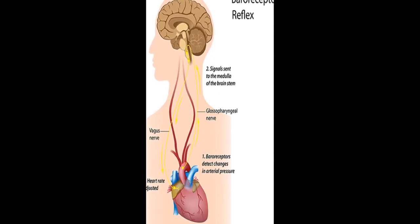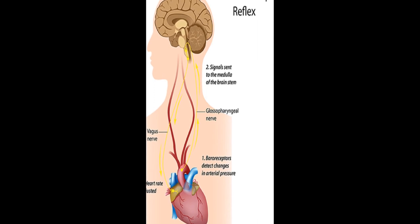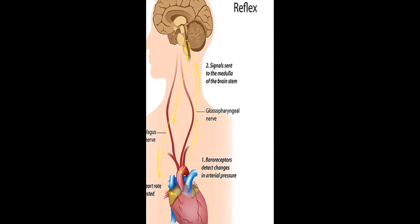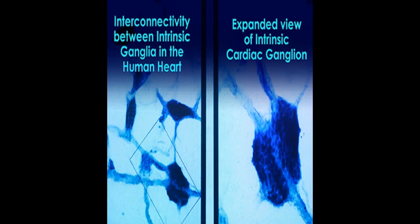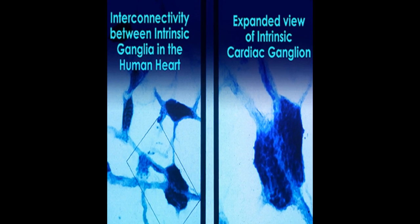The cardiovascular regulation center in the medulla integrates sensory information and input from higher brain centers to adjust heart rate and blood pressure via sympathetic and parasympathetic pathways.